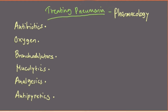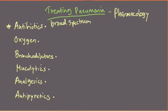The mainstay of pneumonia treatment — one of the most important aspects — is antibiotics. When the patient first presents with pneumonia, you're going to have them start out on a broad-spectrum antibiotic. This is because in the beginning you don't really know what the organism causing pneumonia is, so you want to aim broad and take a kind of shotgun approach so that you're knocking down whatever it is.